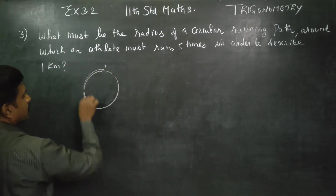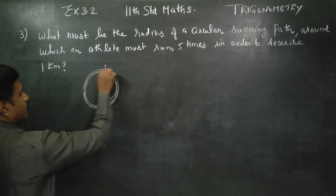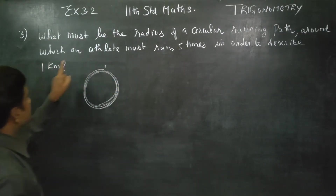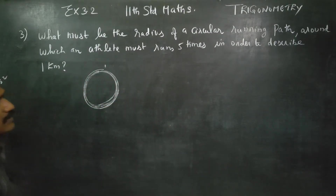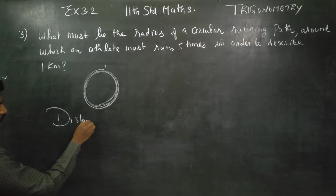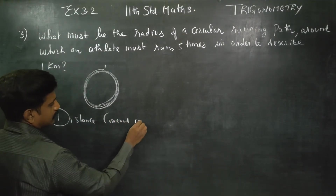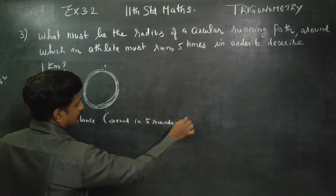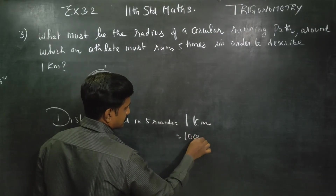The athlete runs 1 time, 2 times, 3 times, 4 times, 5 times. So 5 times will describe 1 kilometer. Distance covered in 5 rounds is 1 kilometer, which can be written as 1,000 meters.